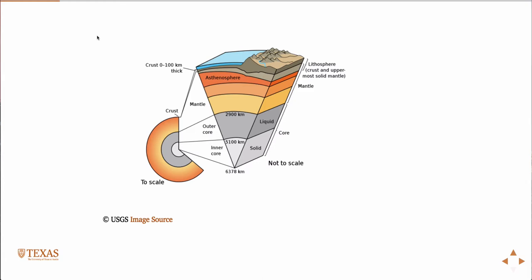And so the crust is everywhere on the order of zero to a hundred kilometers deep. And the aerial density of the crust is about the same, so the aerial density would be like the mass divided by the area, and the aerial density is about the same everywhere.